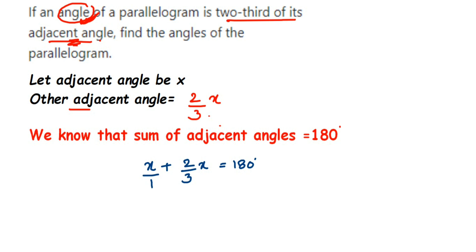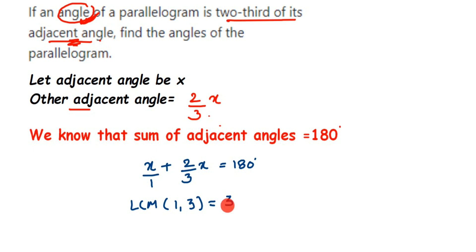To add fractions, we check if the denominators are the same. Here we have 1 and 3, so we take the LCM of 1 and 3 to make the denominators equal. For the first term, we multiply both numerator and denominator by 3 to convert the denominator to 3, so x over 1 becomes 3x over 3.